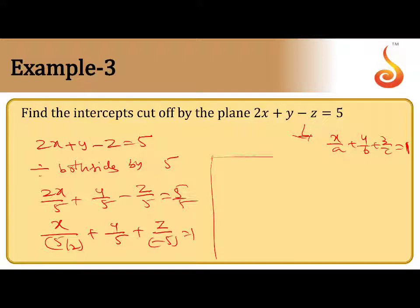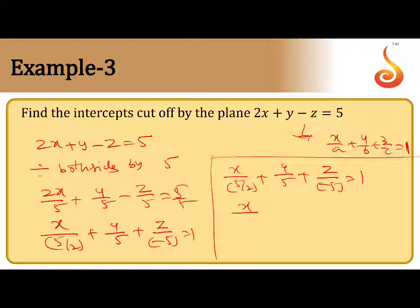Compare this with x/a + y/b + z/c = 1. We get x/(5/2) + y/5 + z/(-5) = 1. Therefore, a = 5/2, b = 5, and c = -5.